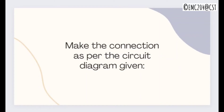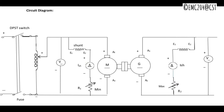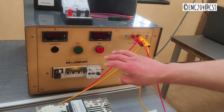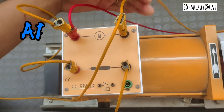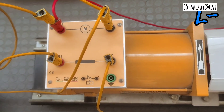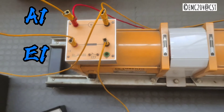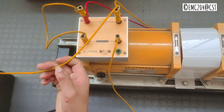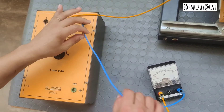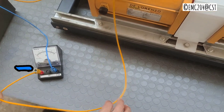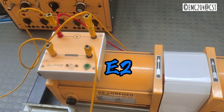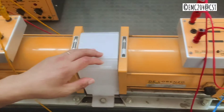Now we will look into the procedures. We will verify the circuit diagram. From the positive terminal of the source, it will be connected to A1 of the motor, and the negative terminal from the source will be connected to A2. A1 and E1 will be shorted, and from E2 it will be taken to the rheostat. From the rheostat it will be taken to the positive terminal of the ammeter, and from the negative terminal of the ammeter it will be connected back to E2.